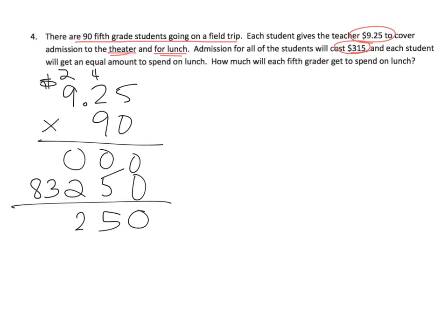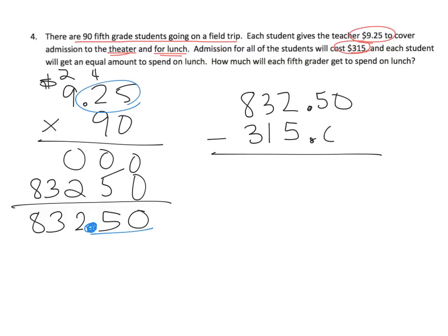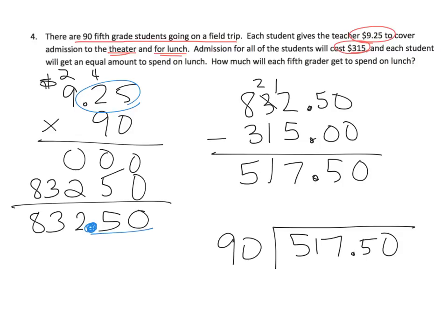And so we see, now where's the decimal? Well since we had two decimals in the problem, we're going to have two decimal places in the answer. So the students have turned in $832.50. But we've got to take away $315. Why? Because that's admission. So now when we subtract, I'm going to do a little bit of regrouping here. We have $517.50. And that is going to be divided amongst the 90 students. And there is our division problem.